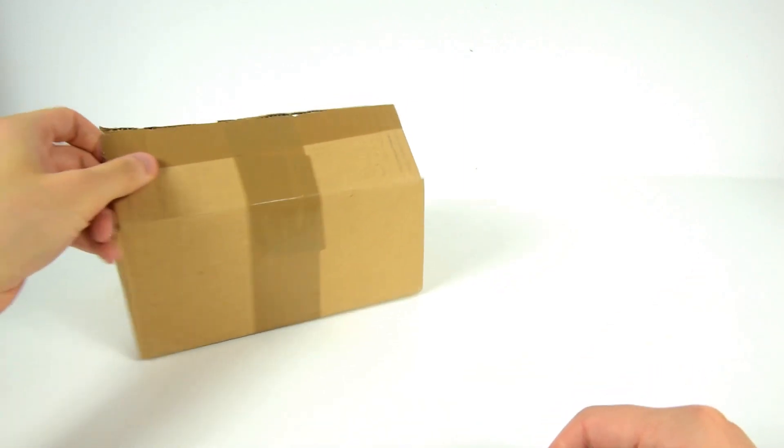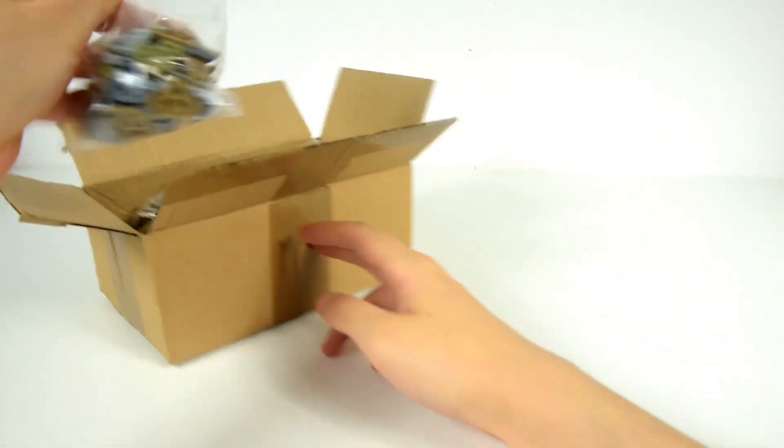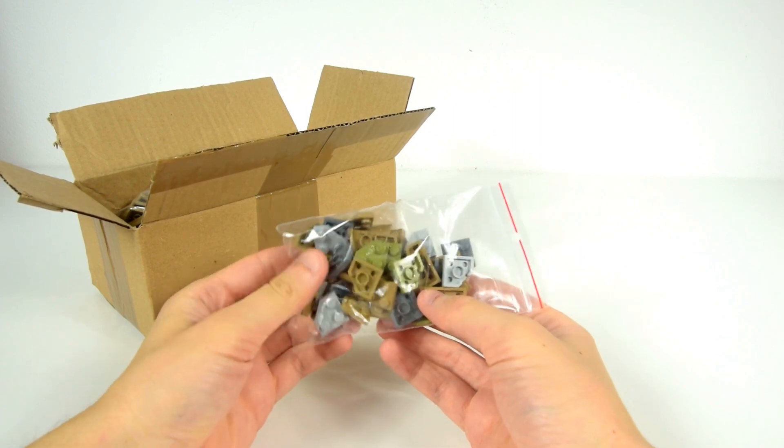So without further ado, let's see what's inside. We have here wedge plates in various colors like olive green, dark tan, light bluish grey and finally dark bluish grey.